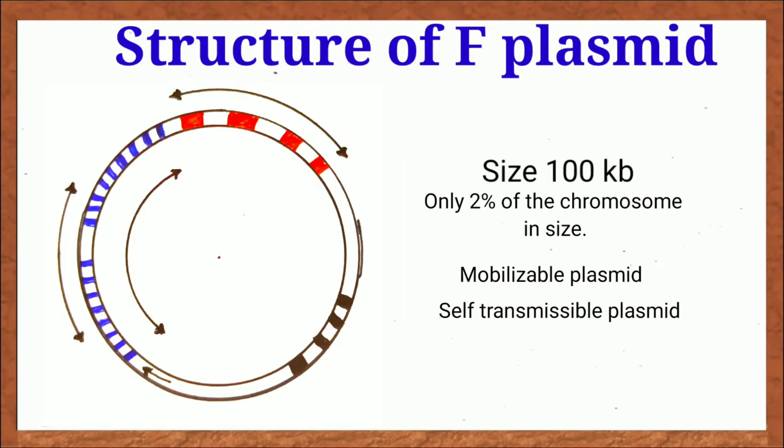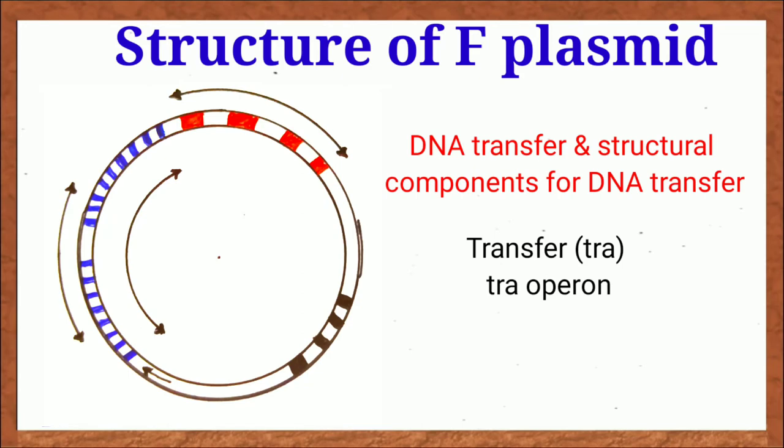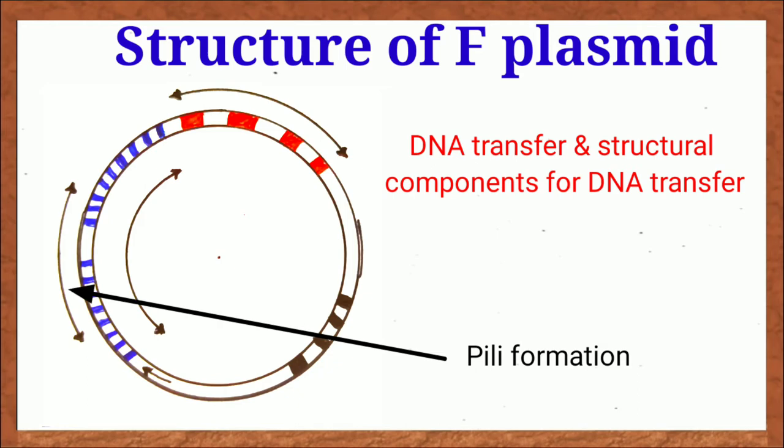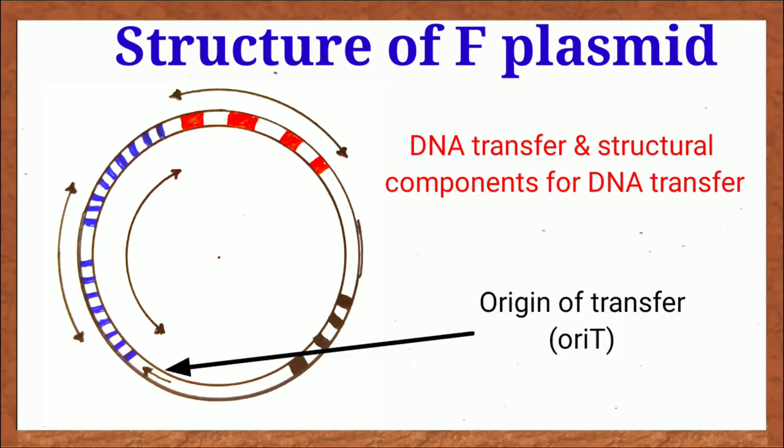F plasmid is a large around 100 kb size extra chromosomal DNA. It contains all the necessary information for DNA transfer in this region. It's called tra operon. It also contains information for pili formation. A short segment called oriT helps in transfer process.